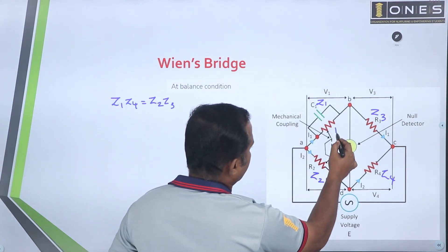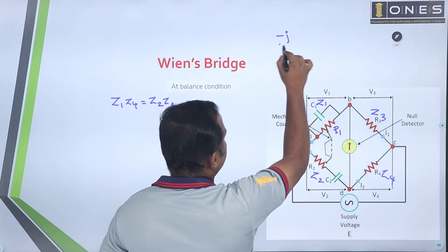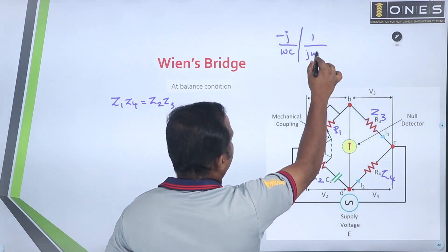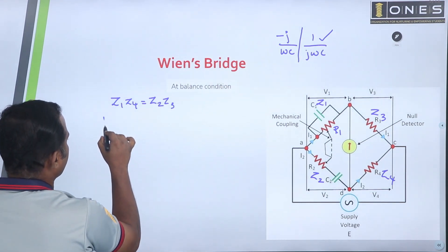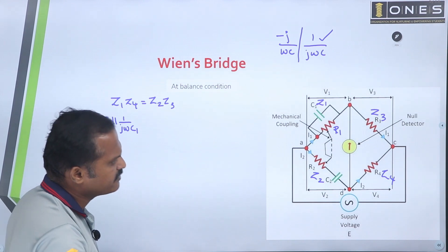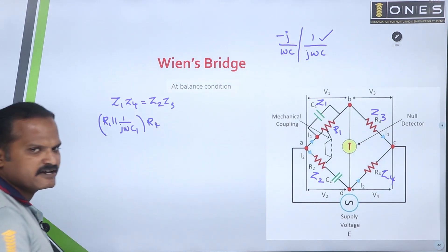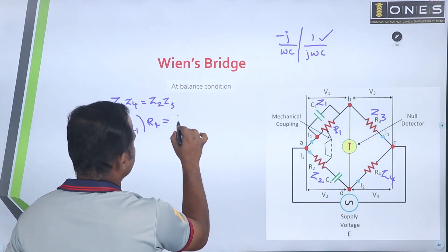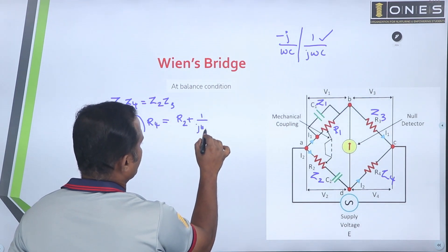Set 1 is the resistance R1. Set 4 is the standard resistance R4. Set 2 is R2 in series with capacitor C2 — the impedance is R2 plus 1 over j-omega-C2.